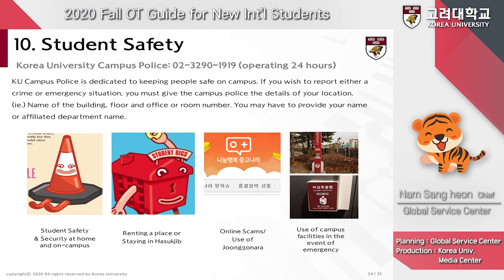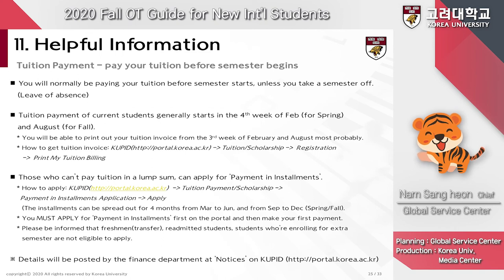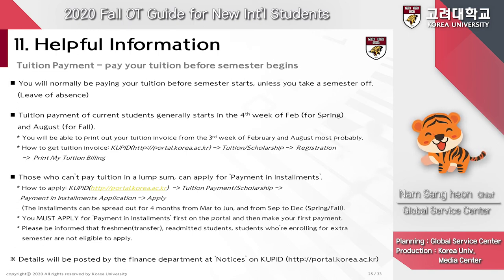You must pay your tuition before the semester begins. Tuition payment for current students generally starts in the fourth week of February for spring semester and in August for fall semester. Those who cannot pay in a lump sum can apply for payment in installments for the next semester. Installment payments are spread out over four months, from March to June for spring semester and from September to December for fall semester. Please be on the lookout for notices and information on QPID regarding this payment plan if you are interested.